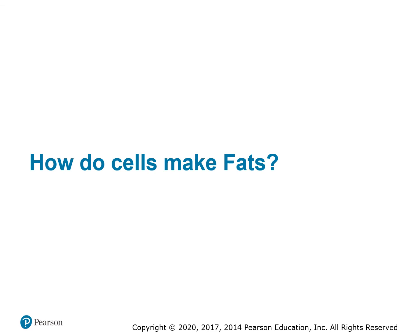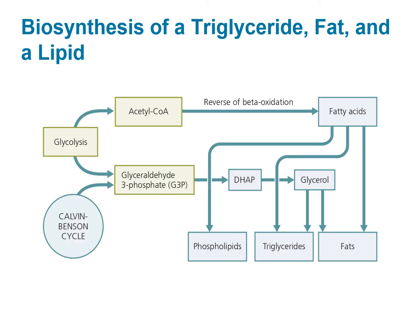How do cells make fats? Here is a flow chart of the biosynthesis of a triglyceride. To make the fatty acid, glycolysis produces acetyl-CoA and reverse beta-oxidation gives us a fatty acid. We can also form glycerol-3-phosphate, which forms dihydroxyacetone phosphate, then glycerol, which can form the triglyceride. The triglyceride contains the fatty acid tail combined with the glycerol head — this is how to form a triglyceride, a fat, a lipid.